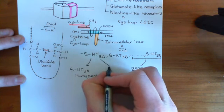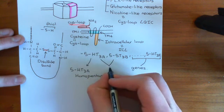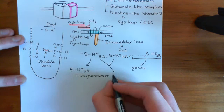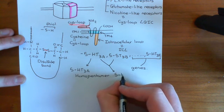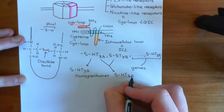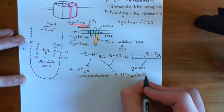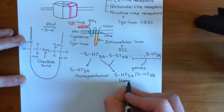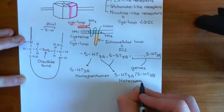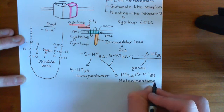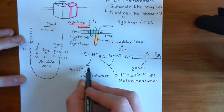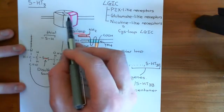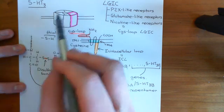The only other type of 5-HT3 receptor found is a heteropentamer in which you have both 5-HT3A and 5-HT3B subunits — the 5-HT3A/5-HT3B heteropentamer. These are the only known 5-HT3 receptors in humans. Either you find 5-HT3 receptors completely composed of 5-HT3A subunits, or receptors which have a mixture of 5-HT3A subunits and 5-HT3B subunits.